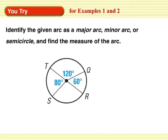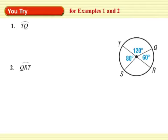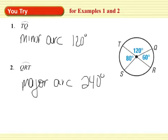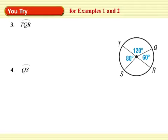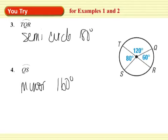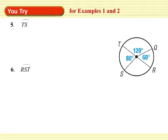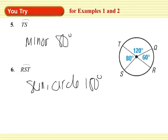You try. Identify the given arc as major arc, minor arc, or semicircle, and find the measure of the arc. First two questions. I'm pushing pause now. There you go. Next two. There you go. Next two. If you're adding or subtracting, I need to see your work. That shouldn't be news to you in the fourth quarter of our year.